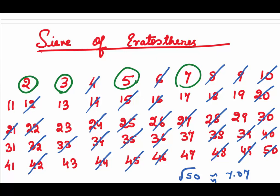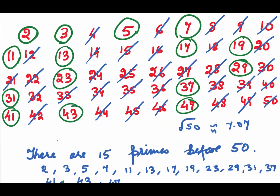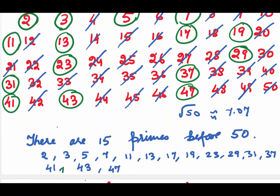Now, the numbers which have not been struck off, they are the primes. So, let's circle them and count how many primes are there. We are circling 11, 13, 17, 19, 23, 29, 31, 37, 41, 43 and 47. If you count, you will see there are 15 primes before number 50. I have listed all the numbers here.